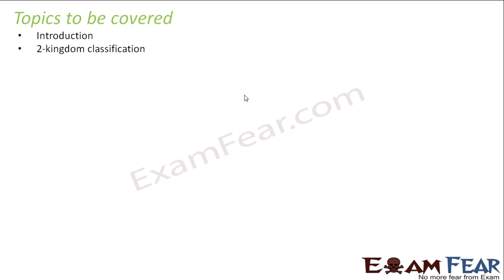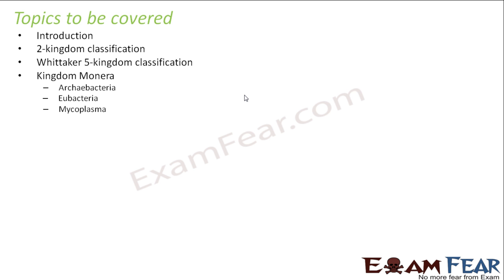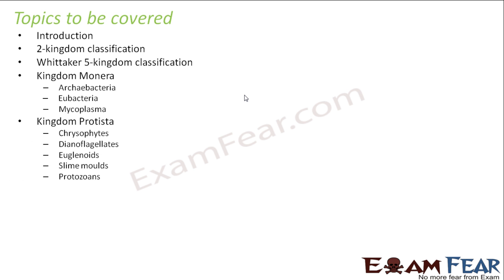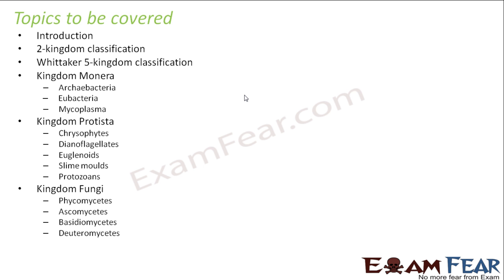Topics to be covered in this lesson are: Introduction to Kingdom Classification, Whittaker 5 Kingdom Classification, Kingdom Monera wherein we'll talk about Archaebacteria, Eubacteria, Mycoplasma; Kingdom Protista wherein we'll discuss Chrysophytes, Dinoflagellates, Euglenoids, Slime Molds and Protozoa; Kingdom Fungi wherein we'll talk about Phycomycetes, Ascomycetes, Basidiomycetes and Deuteromycetes. And finally we'll conclude with a discussion on Viruses, Viroids and Lichens.